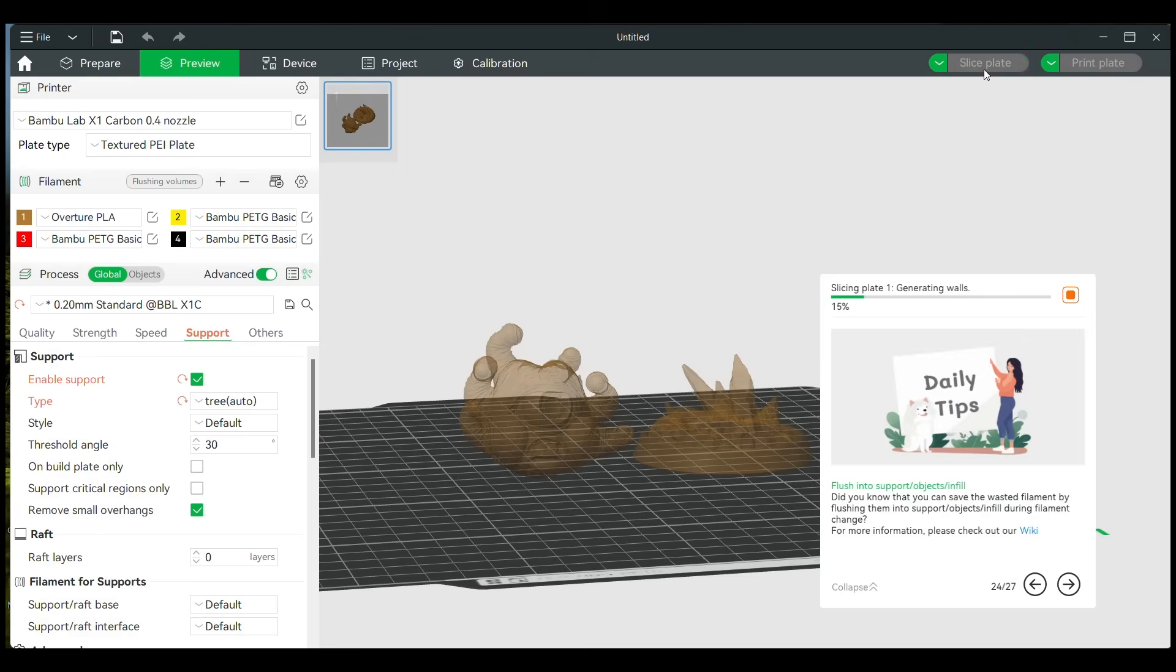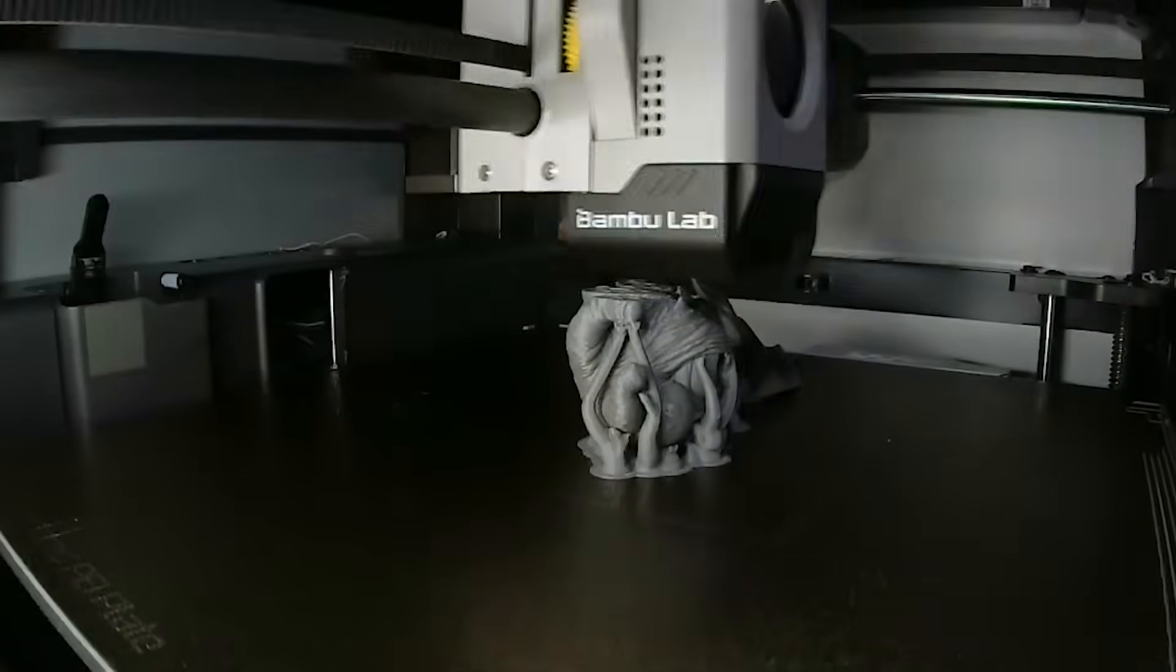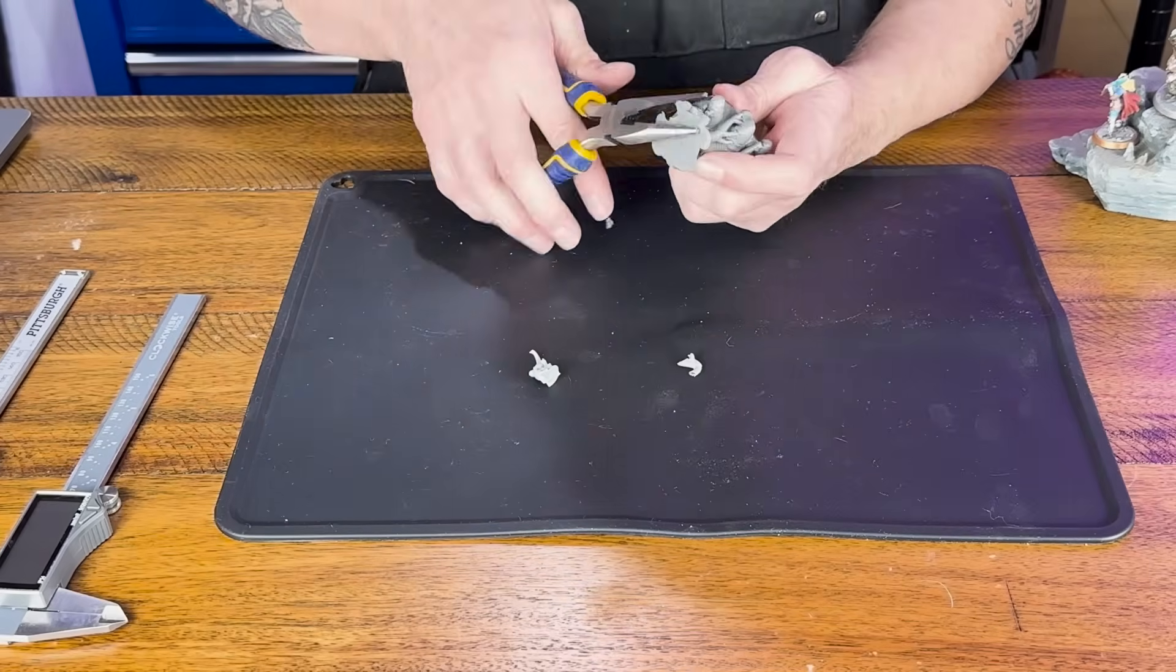Once that's all done, we're going to enable support and we're going to slice this print and send it to our printer. Once we get it printed, we're going to just clean it up real quick and then we're going to add our LEDs.